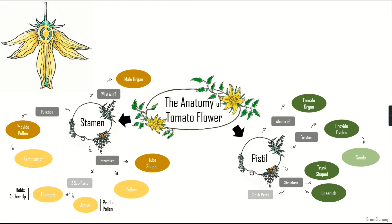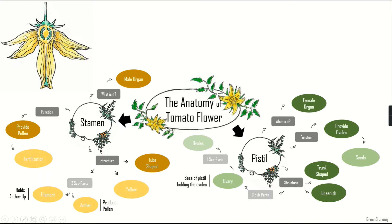The pistil has three sub-parts. The first is the ovary — the base of the pistil that holds the ovules. The ovary is right at the base and this is what will become a tomato. The ovary itself contains ovules located inside it, which will become the seeds.